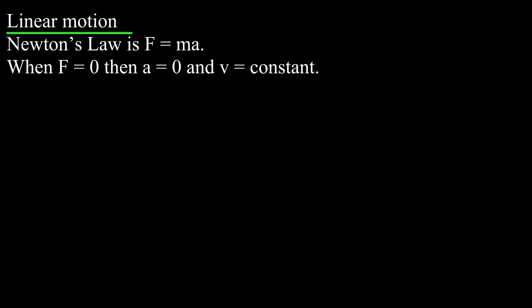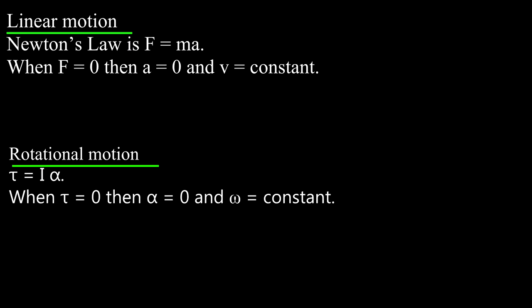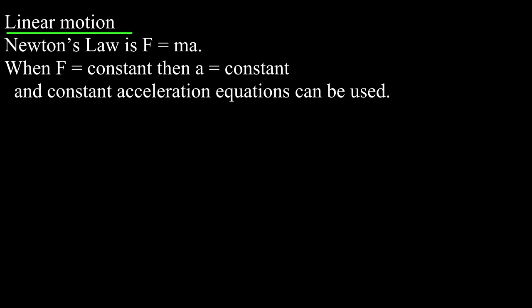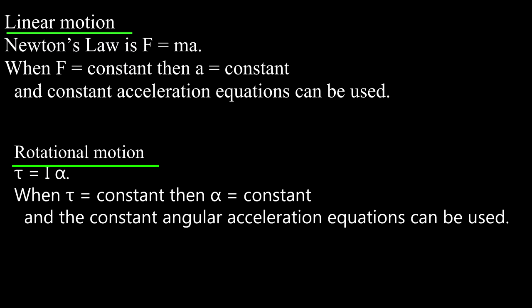In linear motion, when the force is zero, then the acceleration is zero and a mass will move at constant speed forever. For rotational motion, when the torque is zero, then the angular acceleration is zero and an object will spin at a constant rate forever. In linear motion, when the force is constant, the acceleration is constant and the constant acceleration equations can be used. In rotational motion, when the torque is constant, the angular acceleration is constant and the constant angular acceleration equations can be used.